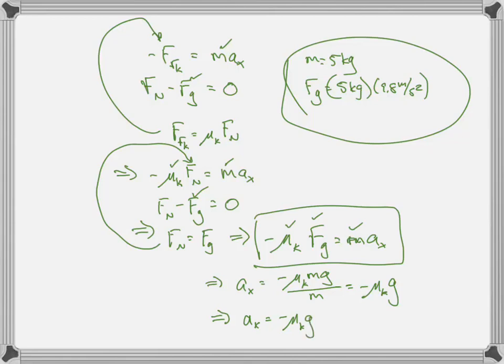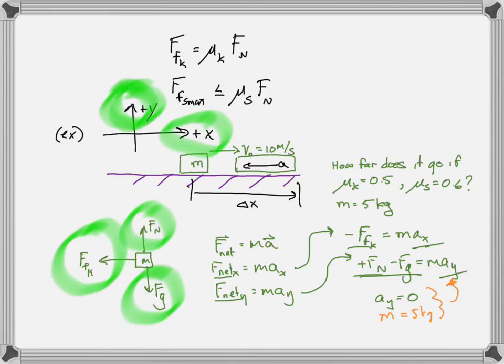That minus sign confirms the acceleration is in the negative x direction, with magnitude μk·g. Plugging in: the acceleration is 4.9 m/s² to the left. That's as far as Newton's second law takes us. The question asks how far the object goes, so now we need kinematics — specifically one-dimensional kinematics to relate acceleration to position.